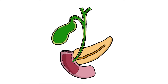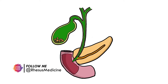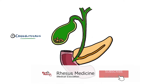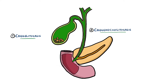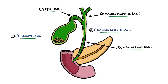Gallstones are stones formed from precipitated bile components that, when present, can give rise to different conditions depending on the location of the stone. The presence of gallstones in the gallbladder is known as cholelithiasis. When the stone is found within the common bile duct, this is termed choledocholithiasis.